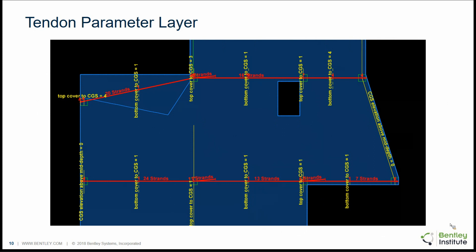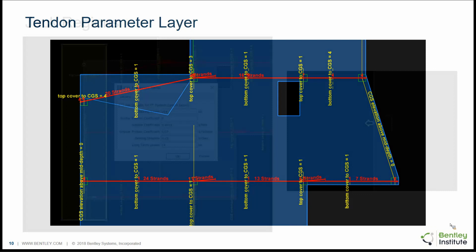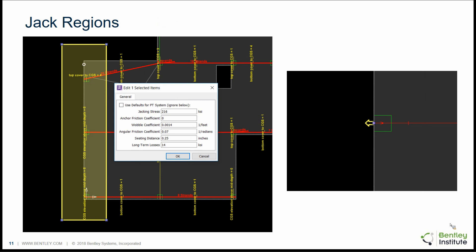RAM Concept offers two ways to model PT tendons: a manual tendon approach and a generated approach. The generated approach is done on the tendon parameter layer, where you model banded tendon lines or distributed tendon quadrilaterals to represent tendons, and then define profile polylines that intersect those objects to dictate the tendon profile. The program uses those properties to automatically generate the tendons. One important thing to note is that manual tendons are not optimized — the program never changes the force or profiles associated with them. You can include manual tendons in models that you optimize, and they will be considered in the analysis and design, but they are not changed.